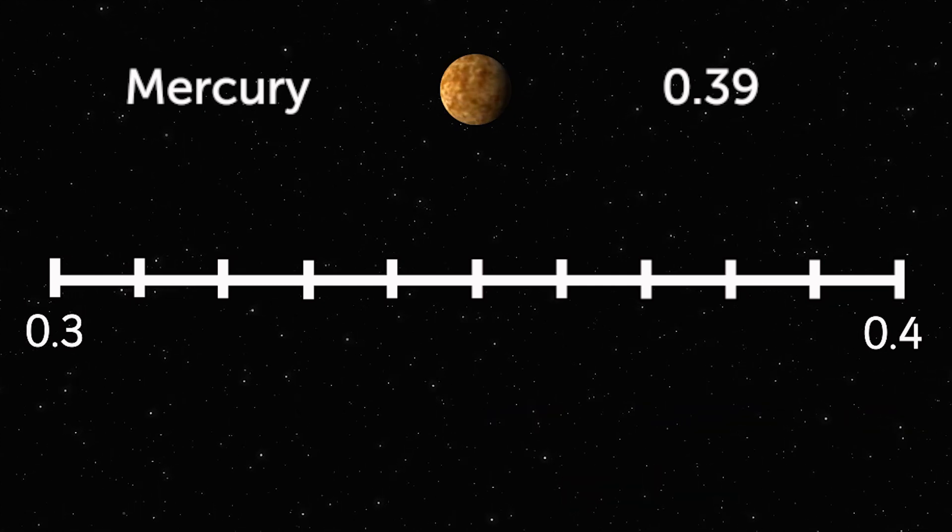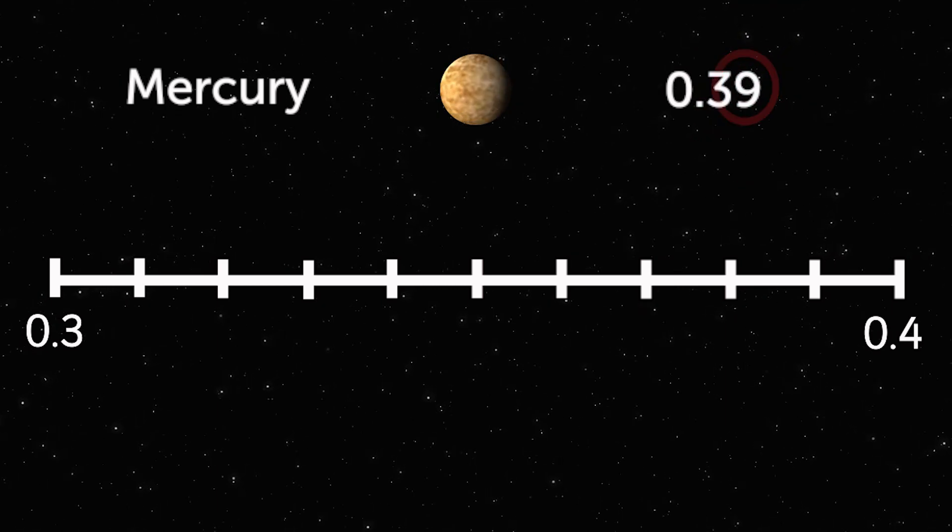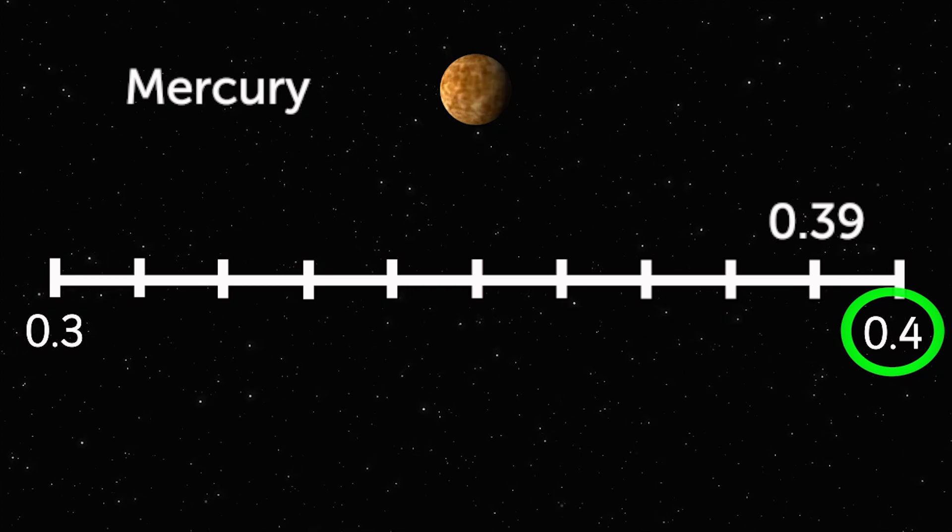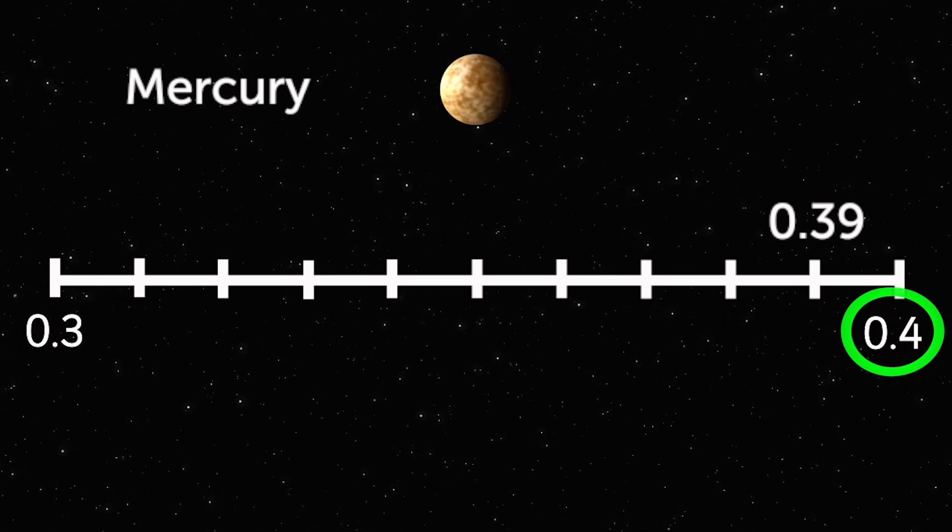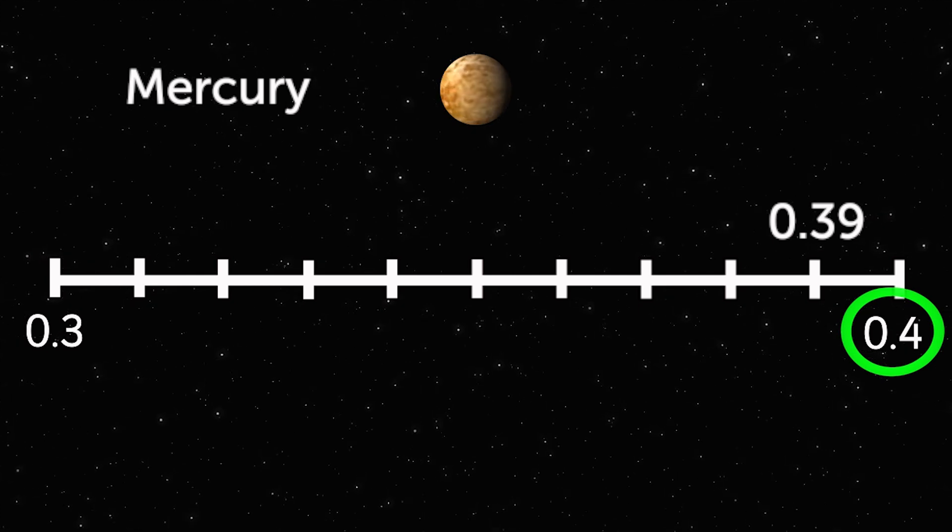0.39 has 9 in the hundredths place, so you round it up to 0.4. Mercury is nearly 0.4 astronomical units from the Sun.